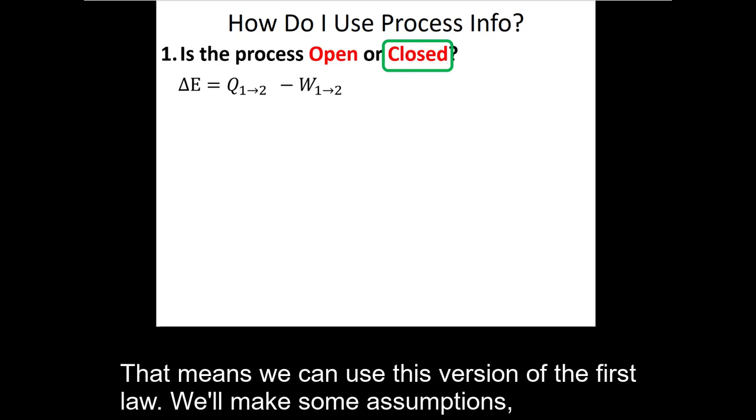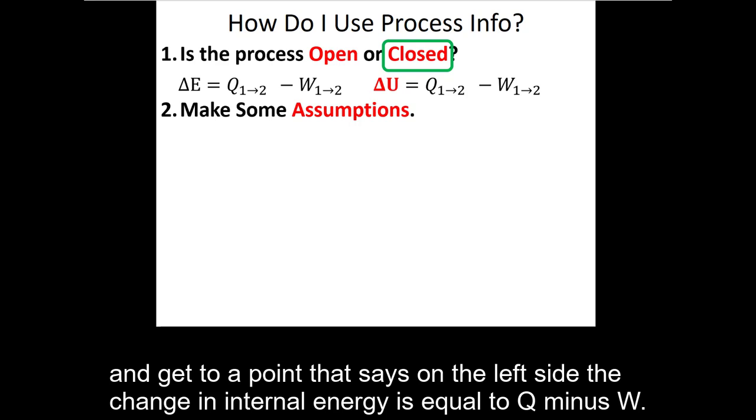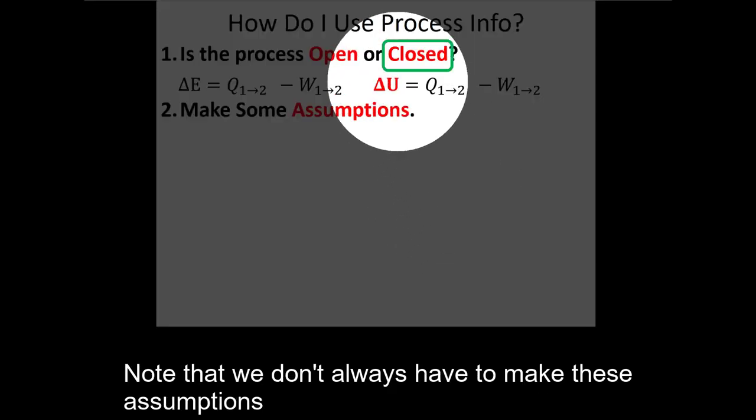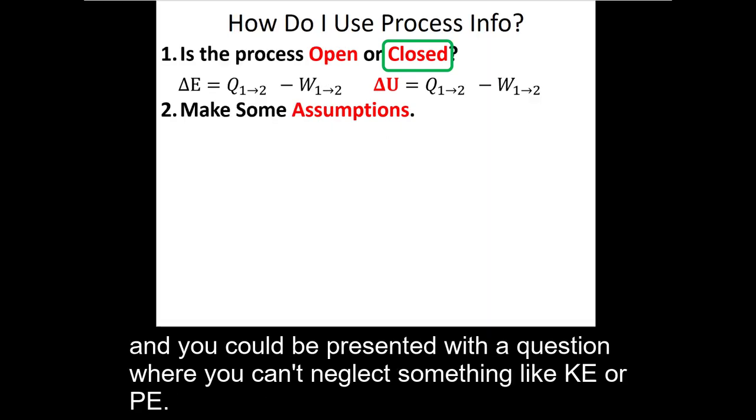That means we can use this version of the first law. We'll make some assumptions and get to a point that says the change in internal energy is equal to Q minus W. Note that we don't always have to make these assumptions, and you could be presented with a question where you can't neglect something like kinetic or potential energy.